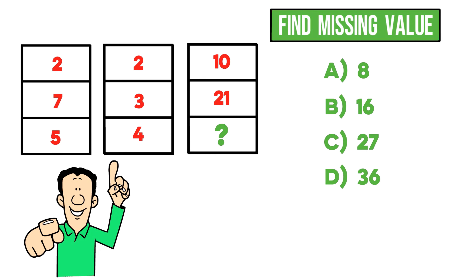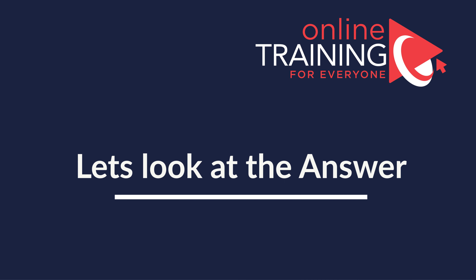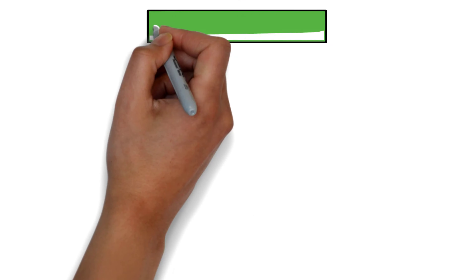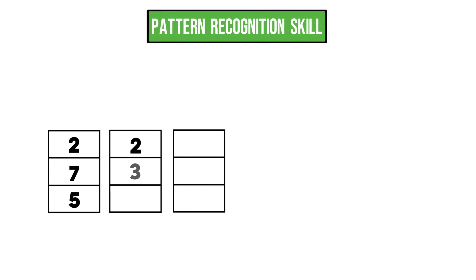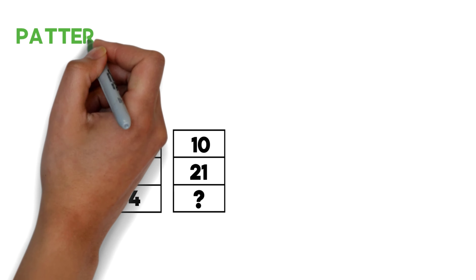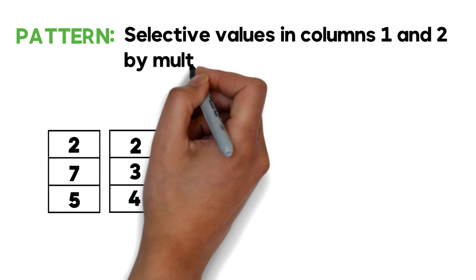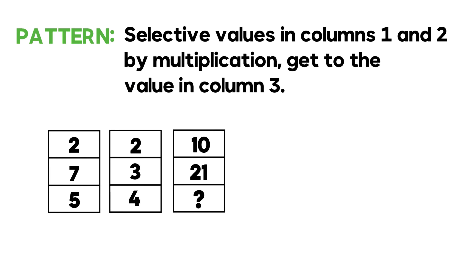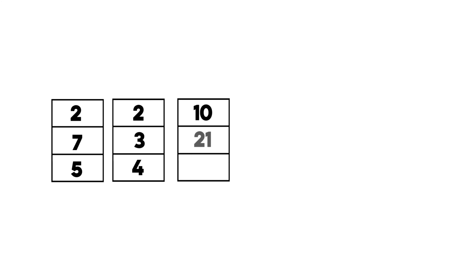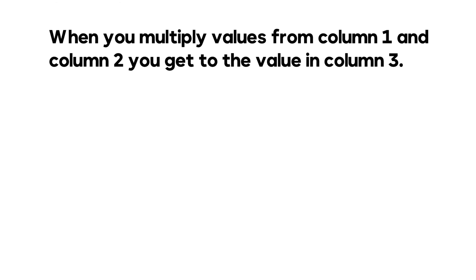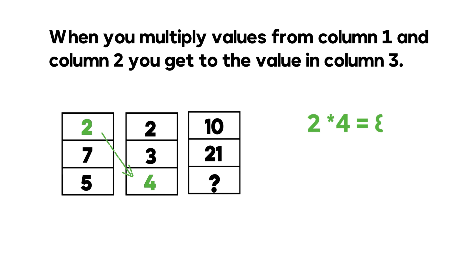Give yourself five to ten seconds to see if you can come up with the answer. The pattern is: values in columns one and two, when multiplied, produce the value in column three. For example, 5 × 2 = 10, and 7 × 3 = 21. So the missing value is calculated by multiplying 2 × 4, which equals 8. The correct answer is choice A.